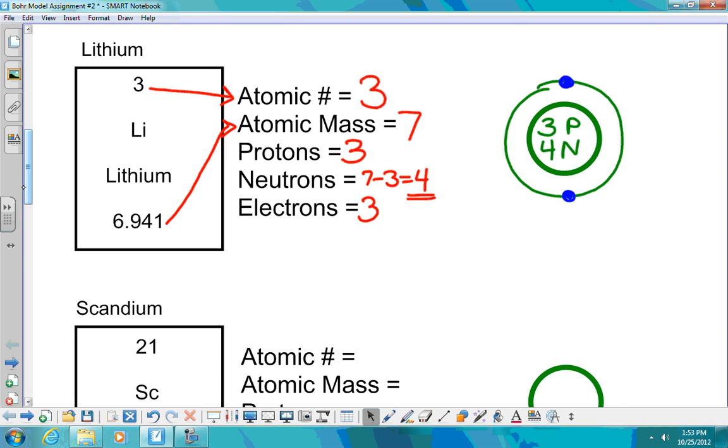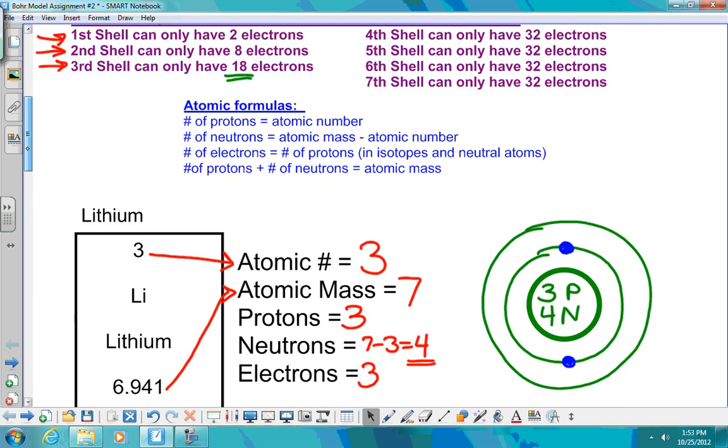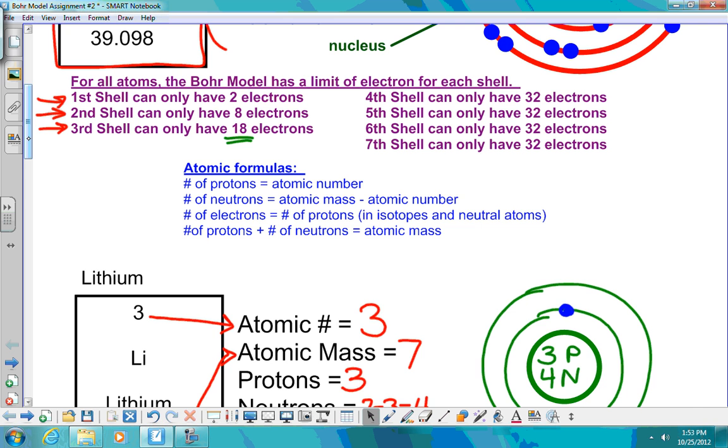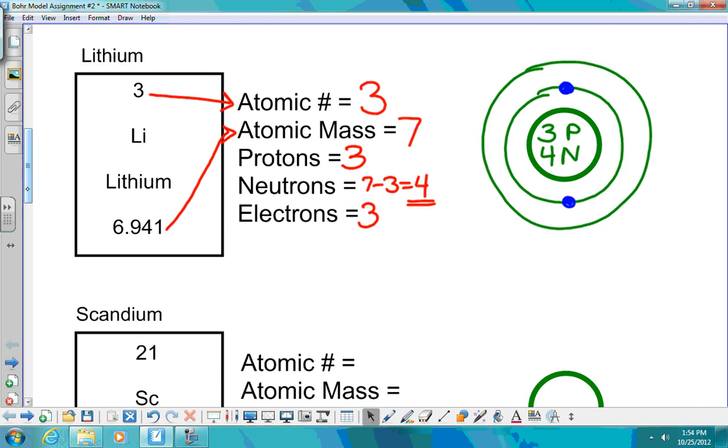So we have to draw a second shell. On the second shell, we can have, according to the rules, we could have up to eight, but we don't need eight more. We only need one more because we need a total of three electrons. So now we have one, two, three electrons. That is what your lithium Bohr model atom will look like.